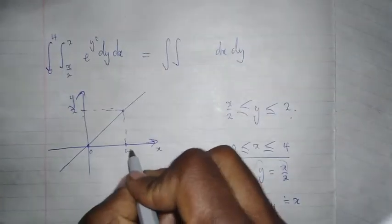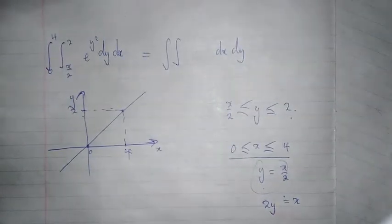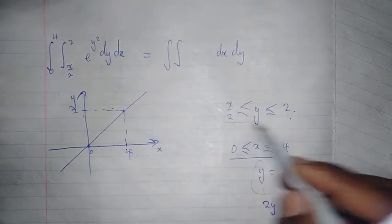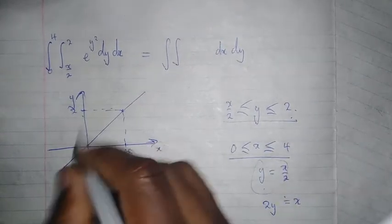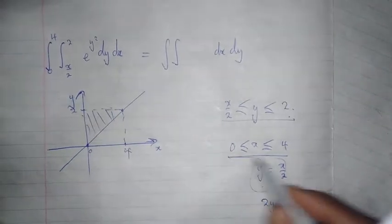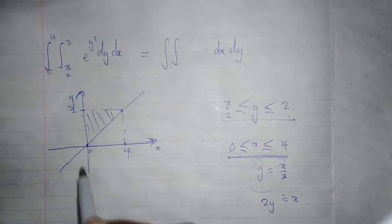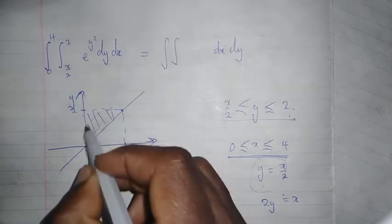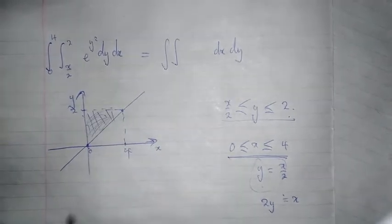Now we need to find the common area. From this inequality, this is the region, and from this equality from 0 to 4, this is the region. So this is the common region that we were looking for.